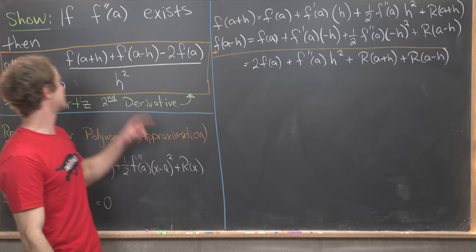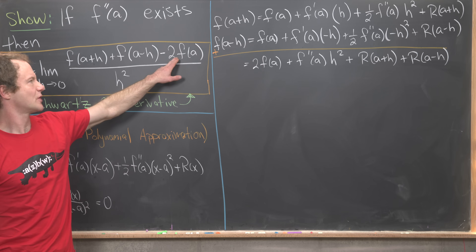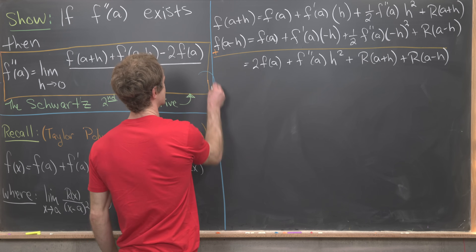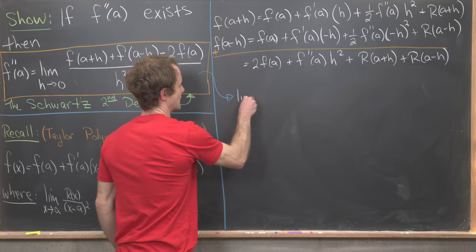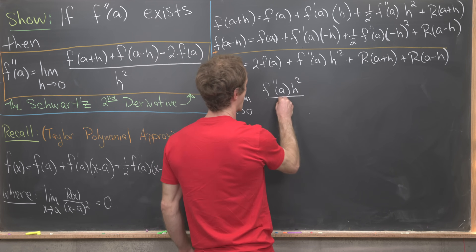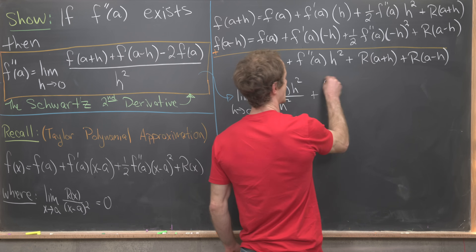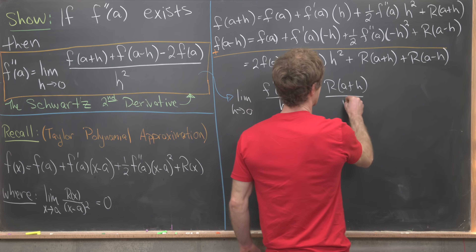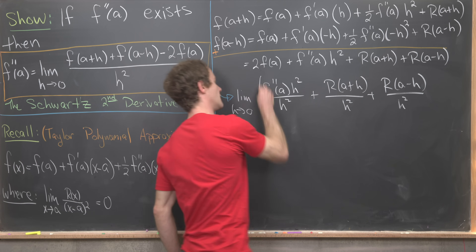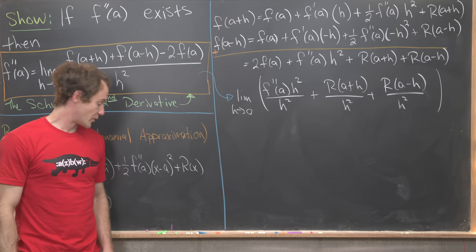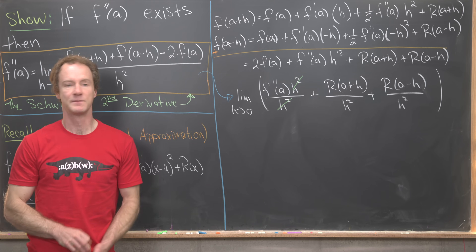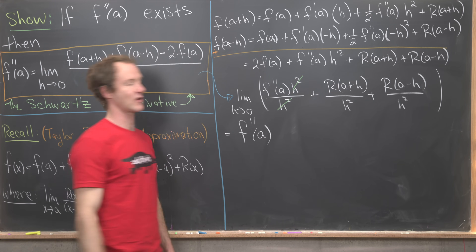Now we can plug this into our numerator. We subtract the two f of a, and that turns the limit into the limit as h goes to zero of f double prime of a times h squared over h squared, plus r of a plus h over h squared, plus r of a minus h over h squared. We can cancel the h squared in the first term, leaving us with f double prime of a.